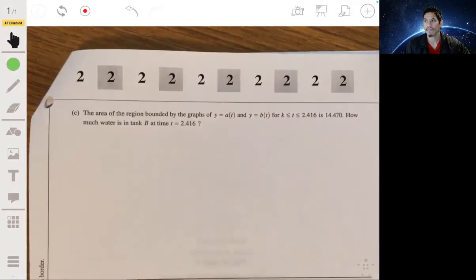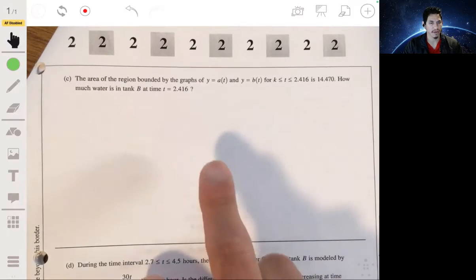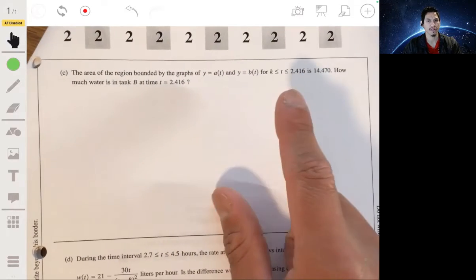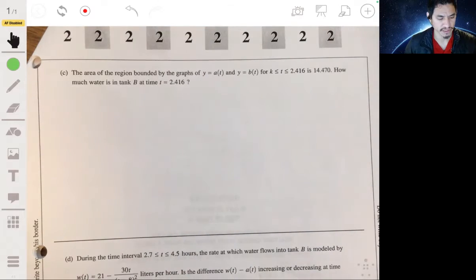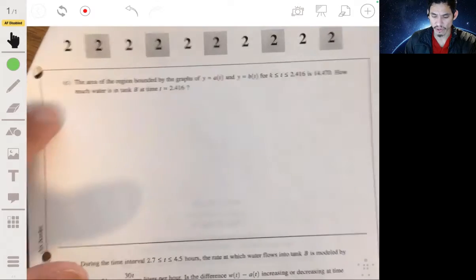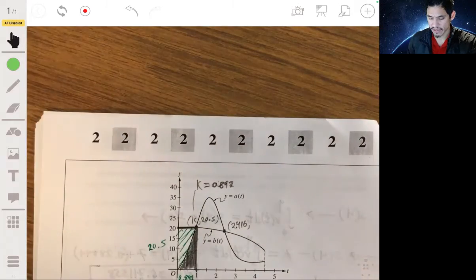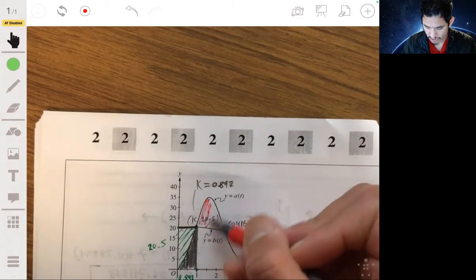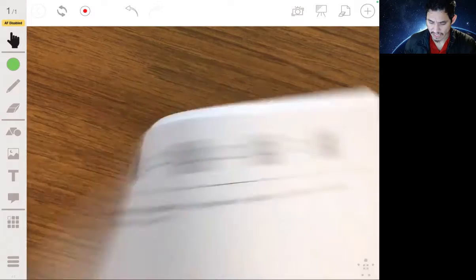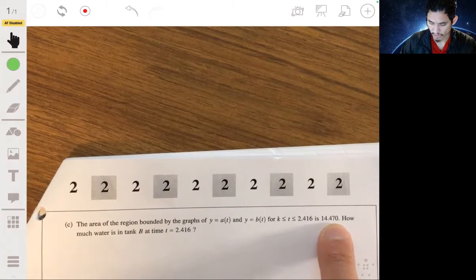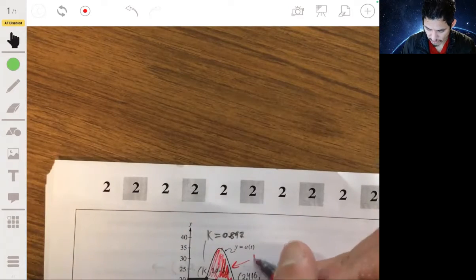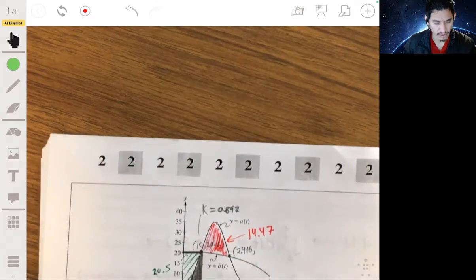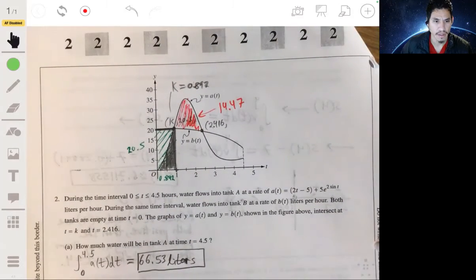Part C: Now, the area of the region bounded by the graphs of Y equals A of T and Y equals B of T for T between K and 2.416 is 14.47. How much water is in tank B at time T equals 2.416? Okay, so what this graph is saying is that this region up here, this red region, it has an area of 14.47.